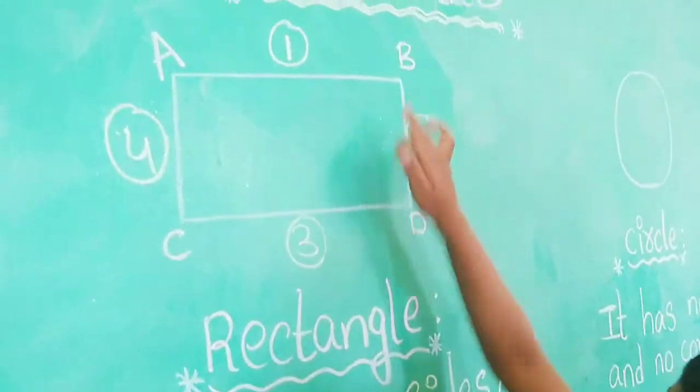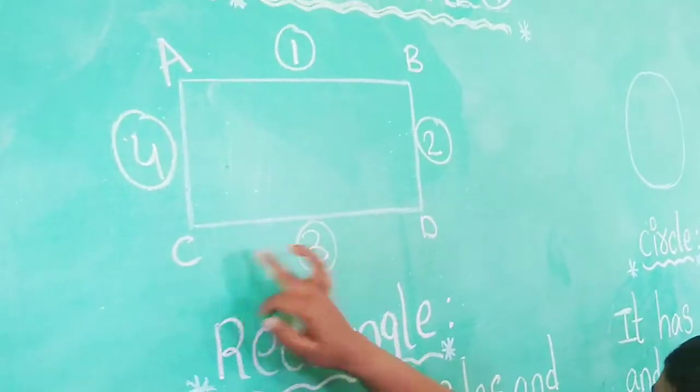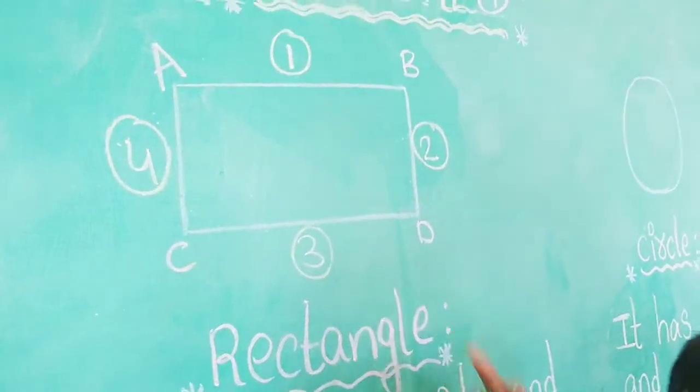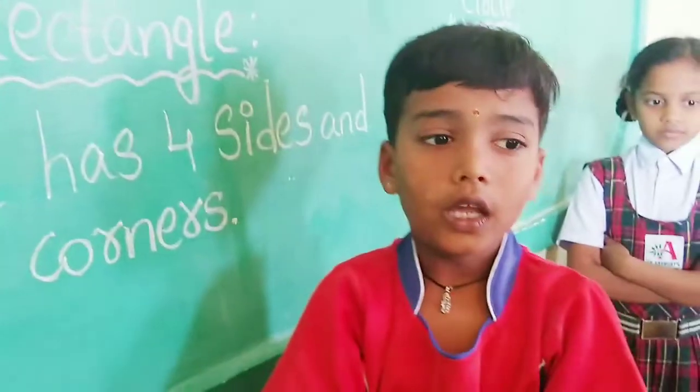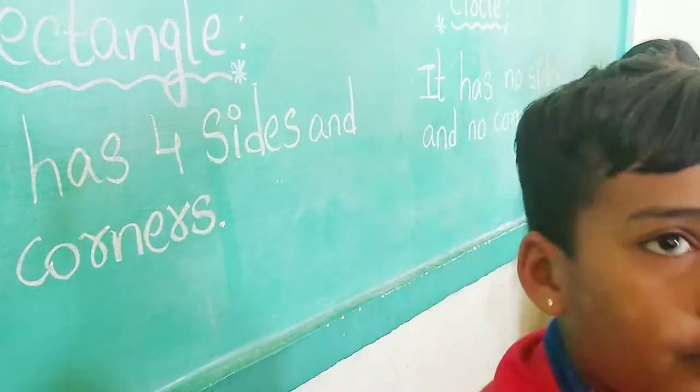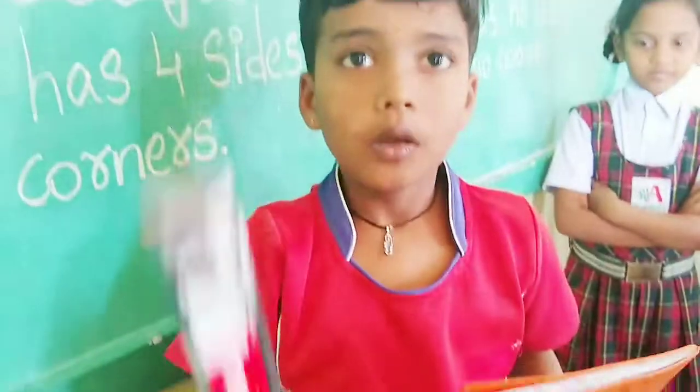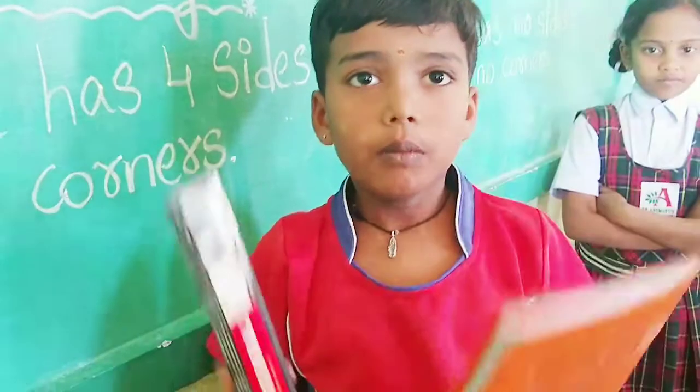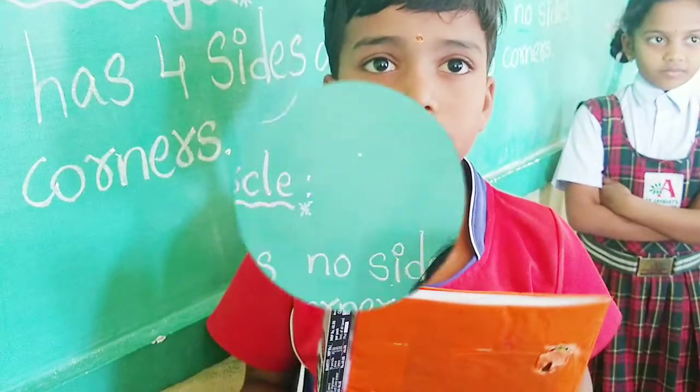Corner A, Corner B, Corner C, Corner D. Examples of rectangle: book, pencil box.